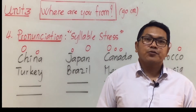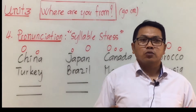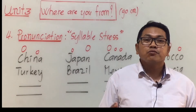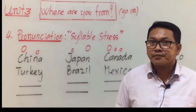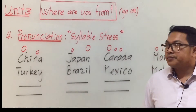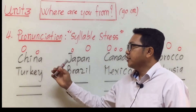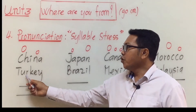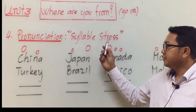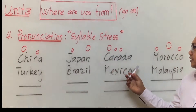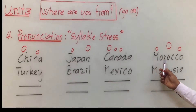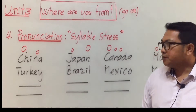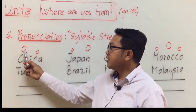Let's practice how to say these country names correctly in English. Some of these are countries you know, but you might be saying them wrong. Let's learn together: China, Turkey, Japan, Brazil, Canada, Mexico, Morocco, Malaysia.